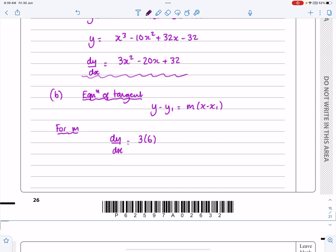So 3 lots of 6 squared minus 20 lots of 6 plus 32, and work out what that works out to be, which is 20. So I've got m.